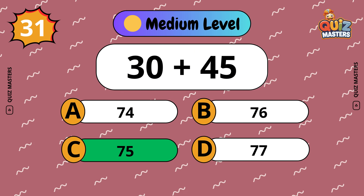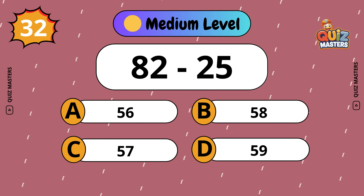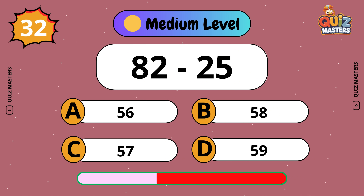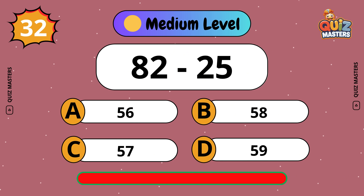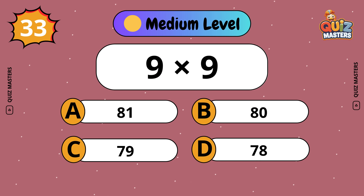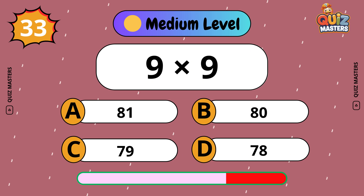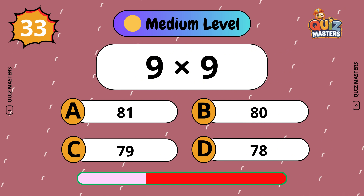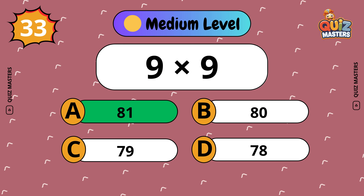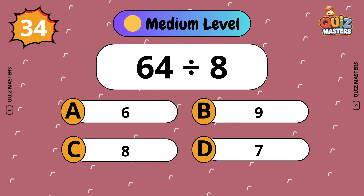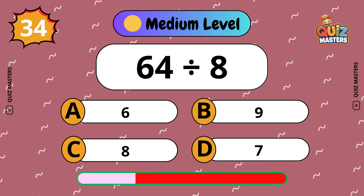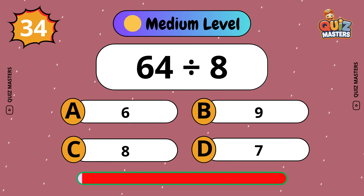59 plus 45. 82 to 25. 57. 97 by 9. 81. 64 divided by 8. 8.